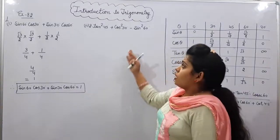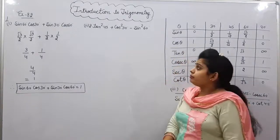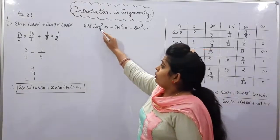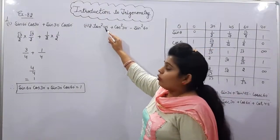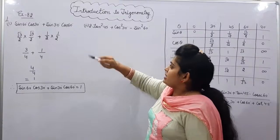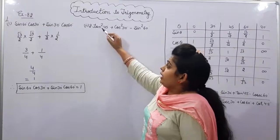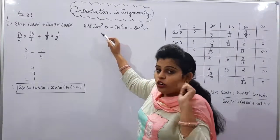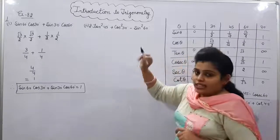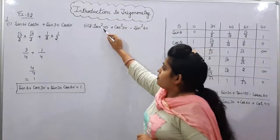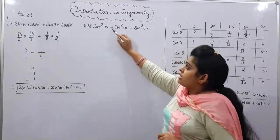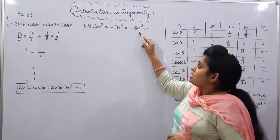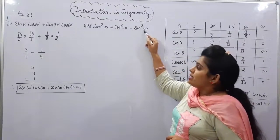Now come to Part 2. What is given in Part 2? 2 tan²45°. Here the square applies to the trigonometric ratio only, not the angle. The full expression is 2 tan²45° + cos²30° − sin²60°.